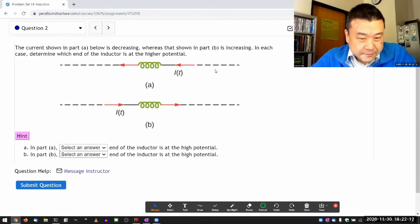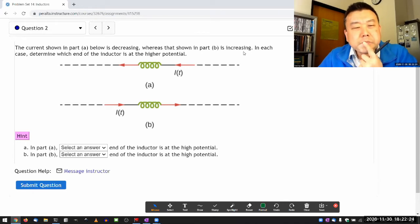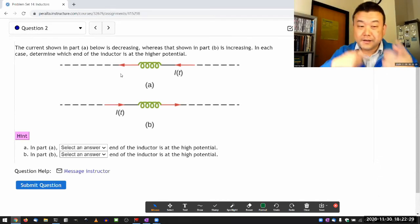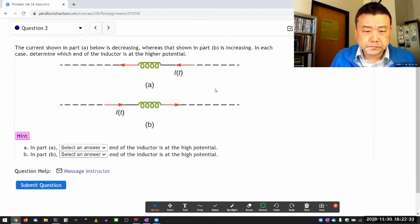So this is what I'm looking at. It says current showing in part A below is decreasing. There's that showing in part B is increasing. There's a chance that this is randomized. Let me answer this, and then I'll see if I can get a new question. So what I'm trying to work out here.